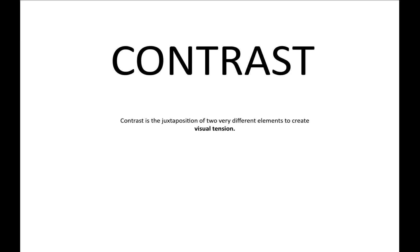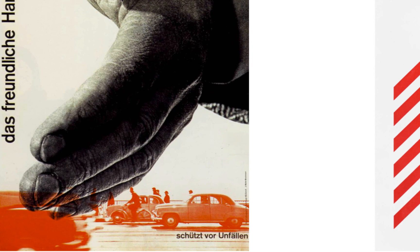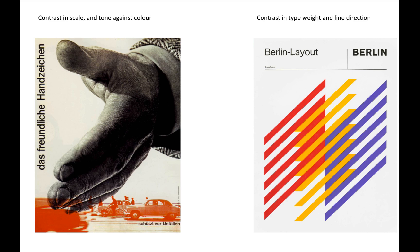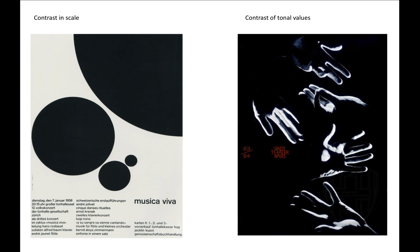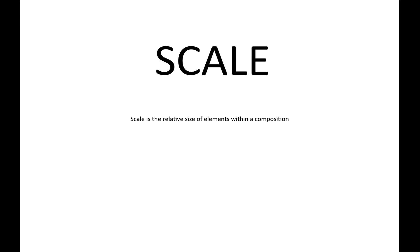Contrast is the juxtaposition of two very different elements to create visual tension. Here we have contrast in scale and tone against colour. Contrast in type weight and line direction. Contrast in scale, contrast of tonal values. High contrast of type against form, and an example of low contrast.